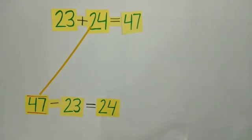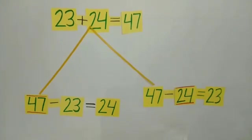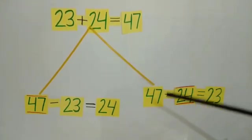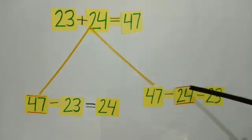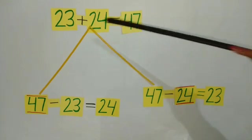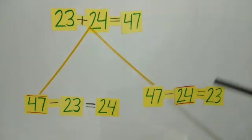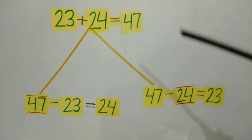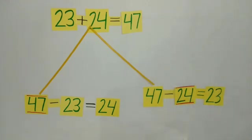Now see students, when I subtract the second number 24 from 47, what do we get? After subtracting 24 from 47, we get 23, meaning we get the first number. So we have got the second fact of subtraction from the fact of addition. Have you got the relation between addition and subtraction?